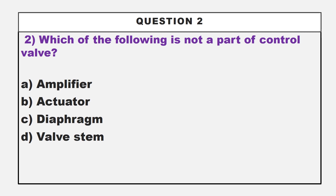This is the second question. Which of the following is not a part of control valve? Option A: amplifier. Option B: actuator. Option C: diaphragm. Option D: valve stem.